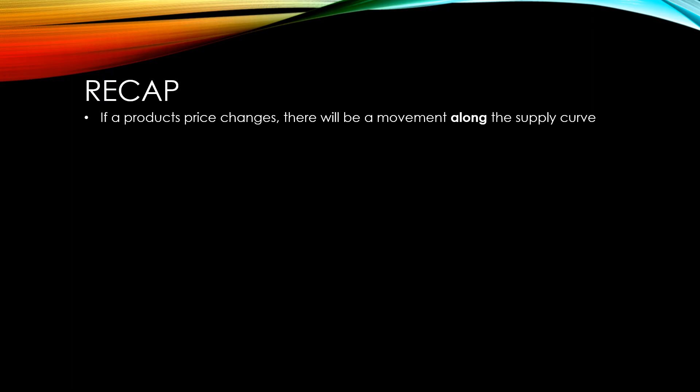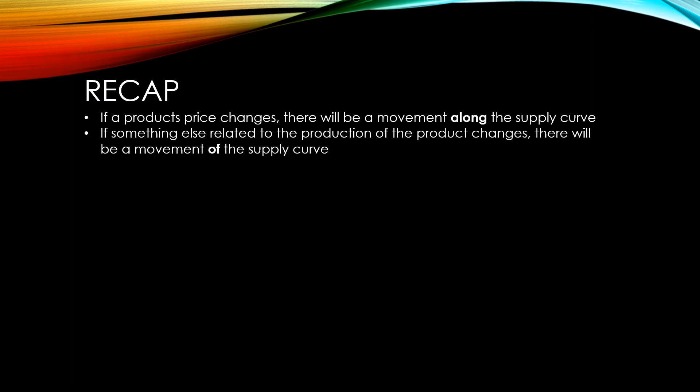To recap the most important points: if a product's price changes, there will be a movement along the supply curve. If something else related to the production of the product changes, there will be a movement of the supply curve. These factors we've looked at are the factors that affect supply directly.